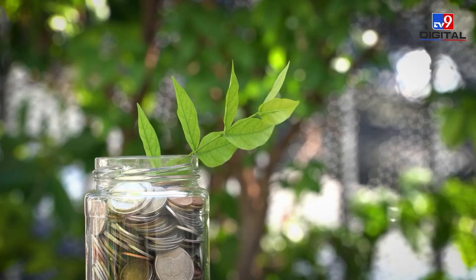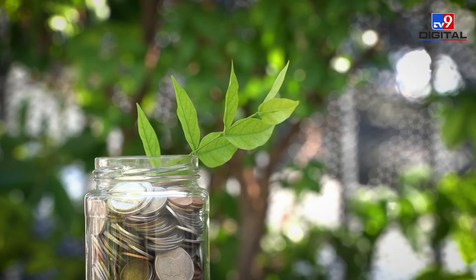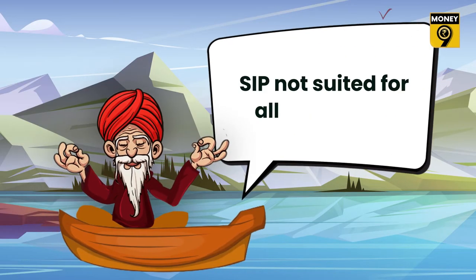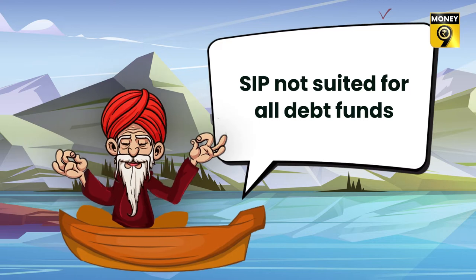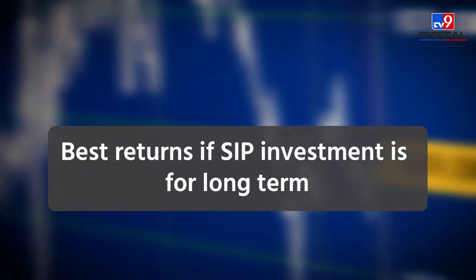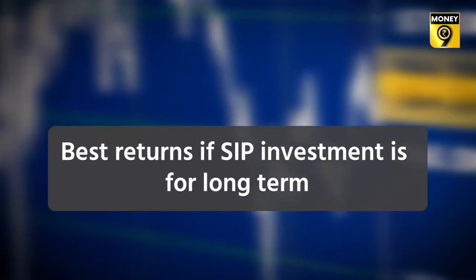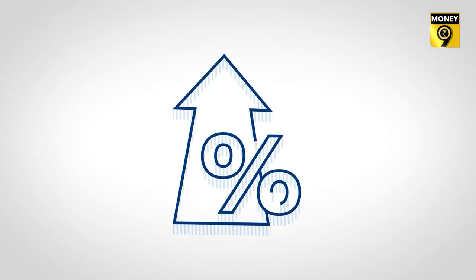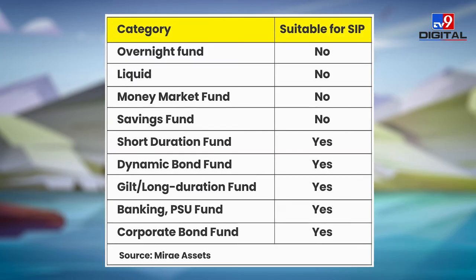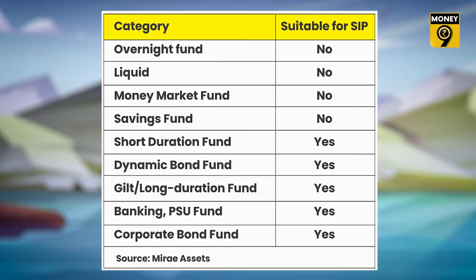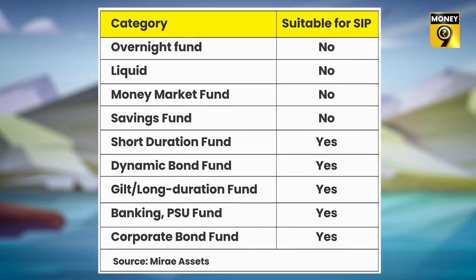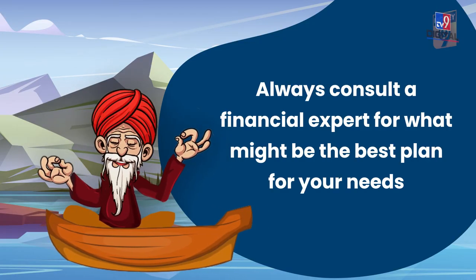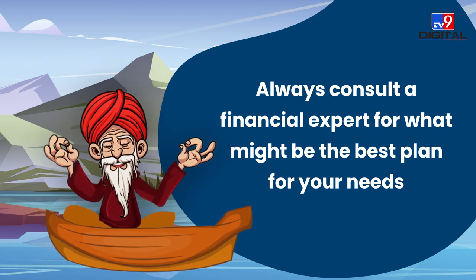Now the question arises that if investors want to invest through SIP, then which type of debt mutual fund should be chosen? The guru says that SIPs are not suitable for all types of debt funds. The best benefits of SIP are available when you invest for the long term, because of the power of compounding. A table is being provided to help you choose which category of debt funds to select for SIP investment. It is always better to consult a financial expert as to which can be the best plan for your needs.